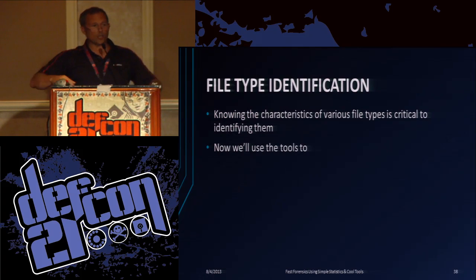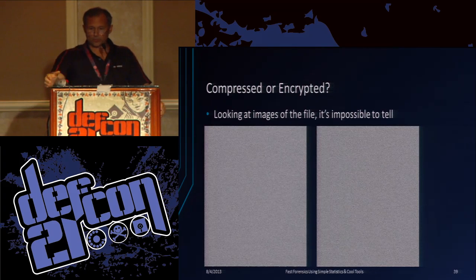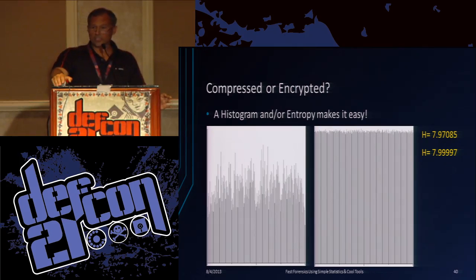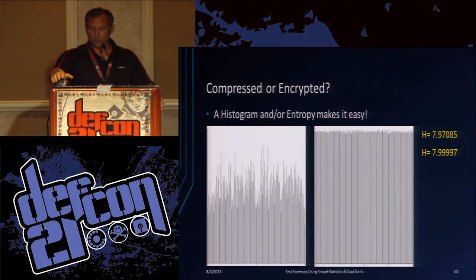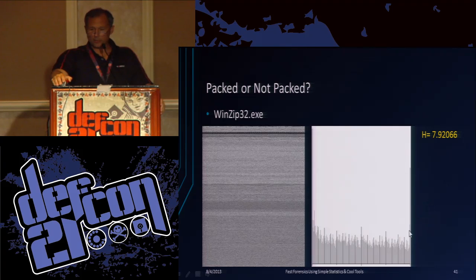File type identification: that's the overview of some things to look for when you use these tools. Can you tell compressed or encrypted just by looking at a picture of the file? Not really. But from the histogram and especially the entropy value — entropy 7.99997 for the encrypted file — it's easy to tell. Unless the files are pretty small, you can use this to distinguish between compressed and encrypted. Packed or not packed: here's an executable. You can't tell by looking at a hex editor. But here it's looking pretty smooth and fairly uniform, so I'm going to say that's more than likely packed.